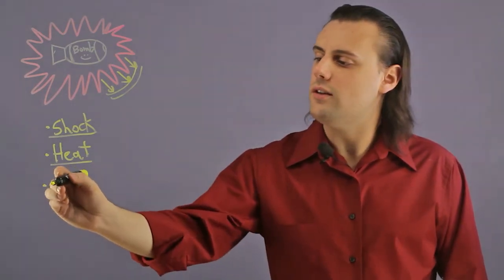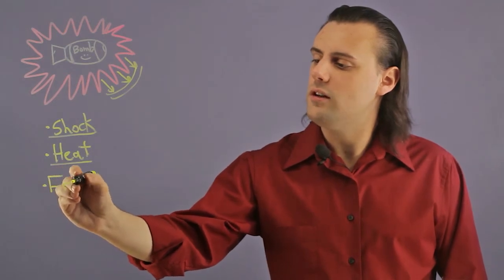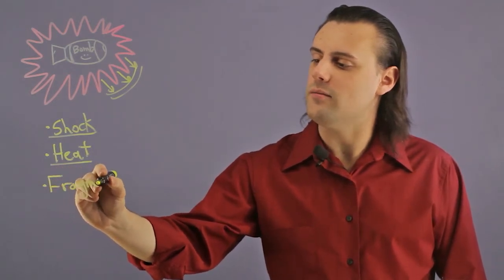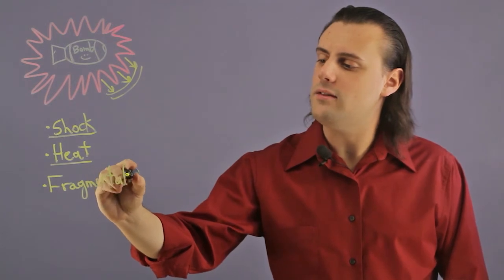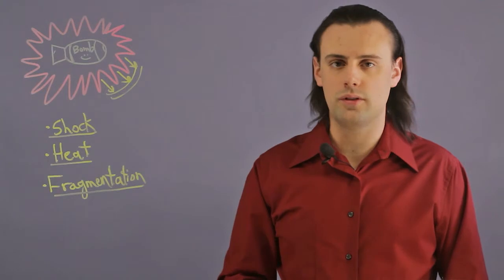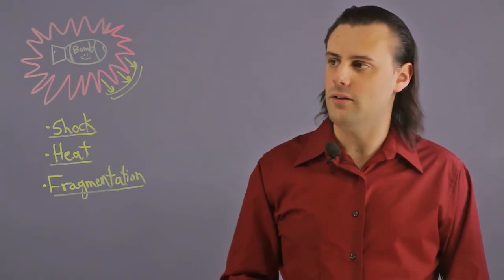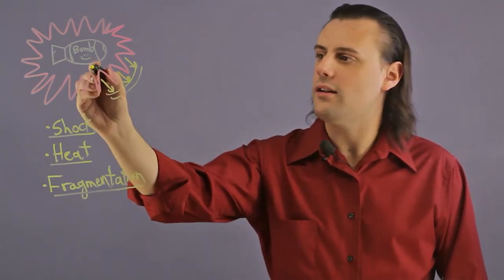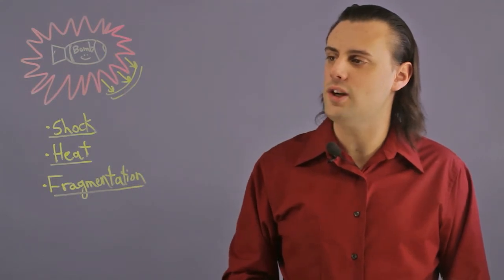A third type of damage is due to fragmentation. When a bomb detonates, it can fling all sorts of projectiles, fragments that come from, for example, the casing of the shell